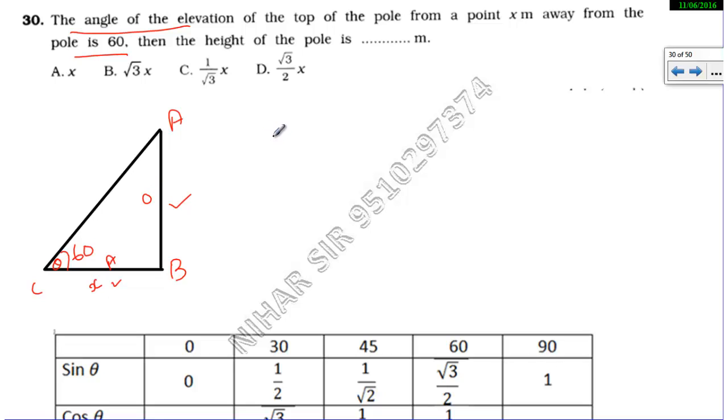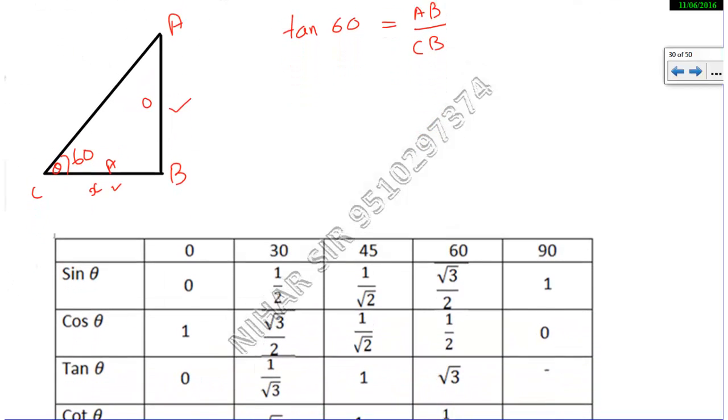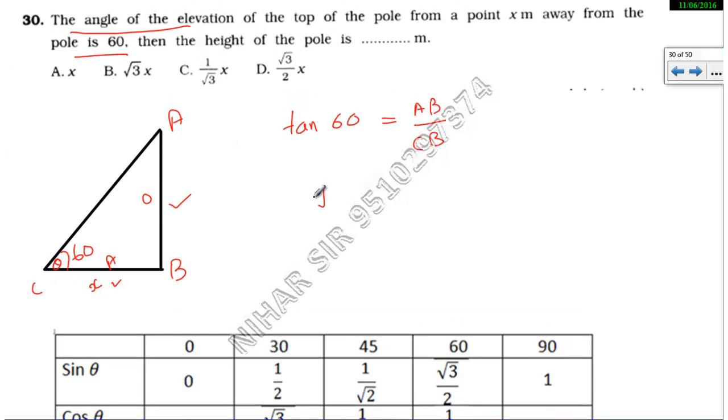Let's use tan60°. It's opposite, that's AB; adjacent, that's CB or BC. Now we'll write the value of tan60° from the table: tan60° = √3. So √3 = AB/x. Therefore √3·x = AB. We got the height of the pole: √3x. Whatever x is, we need to multiply by √3 to get the answer. So here we completed MCQ from 26 to 30.